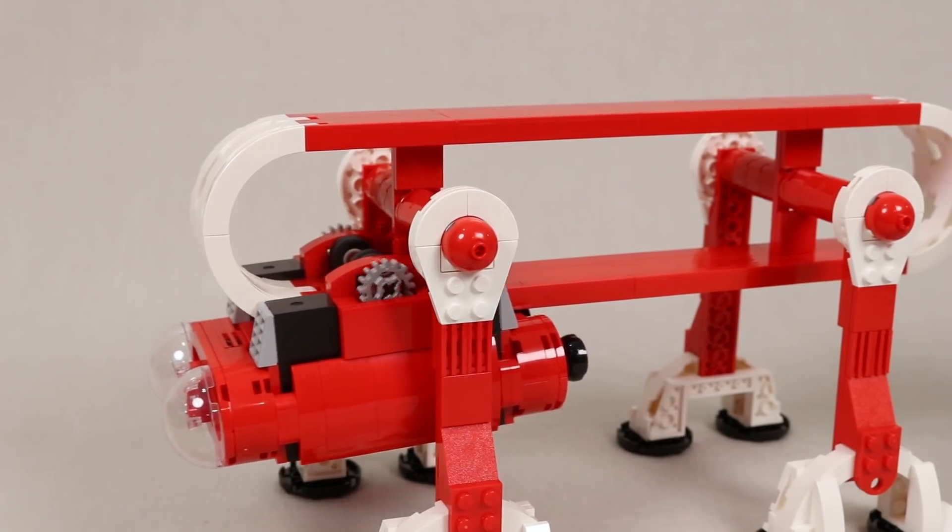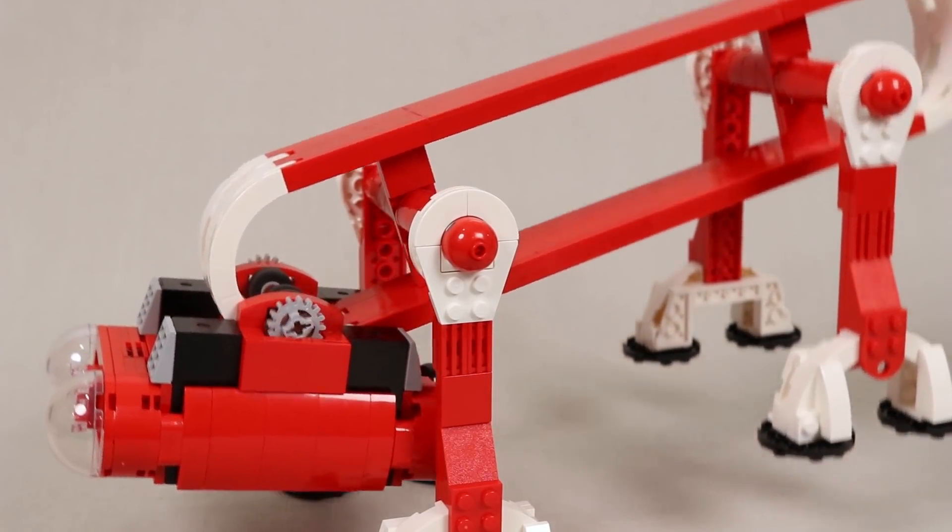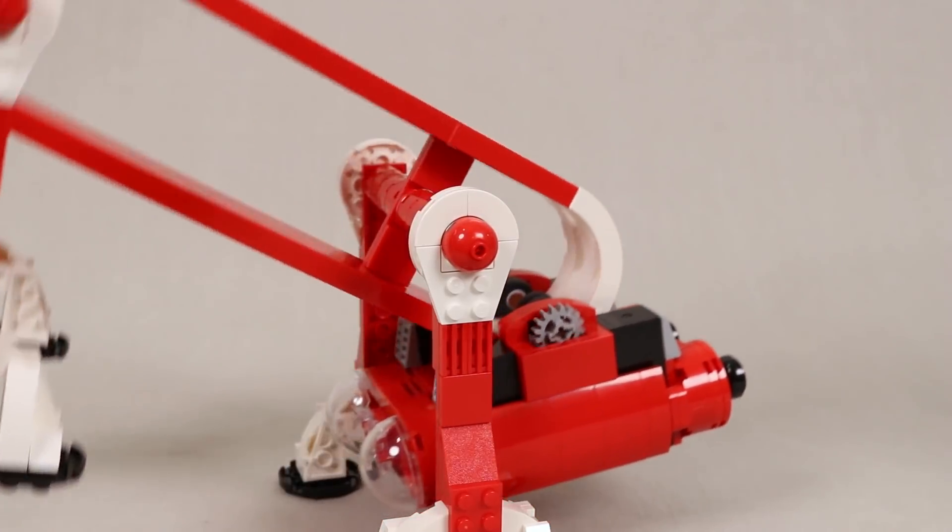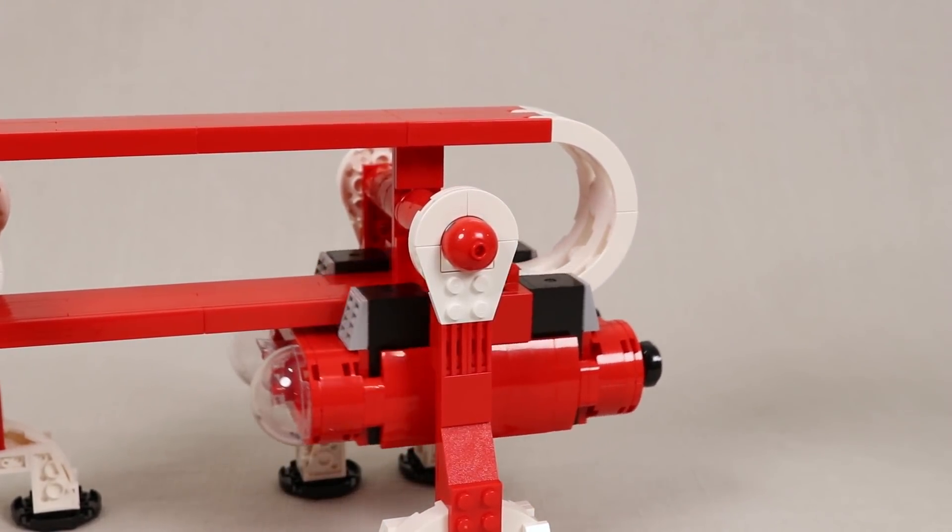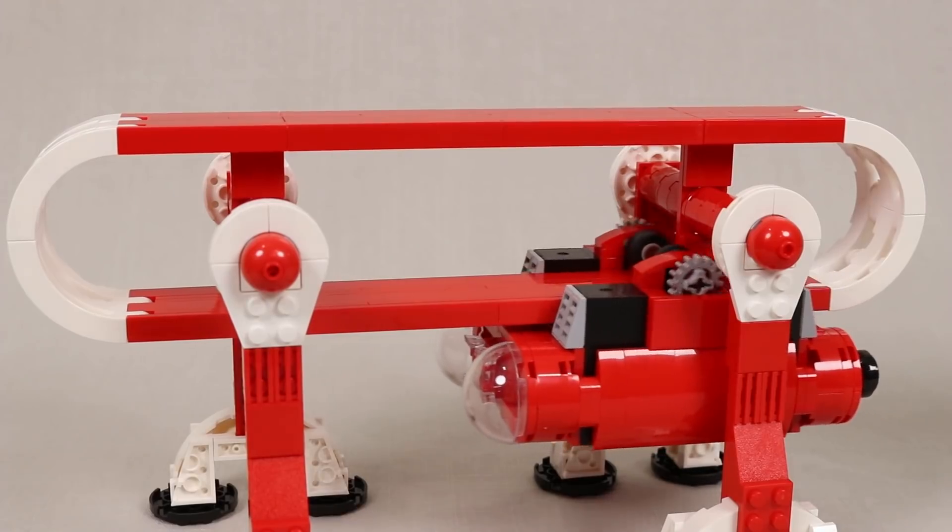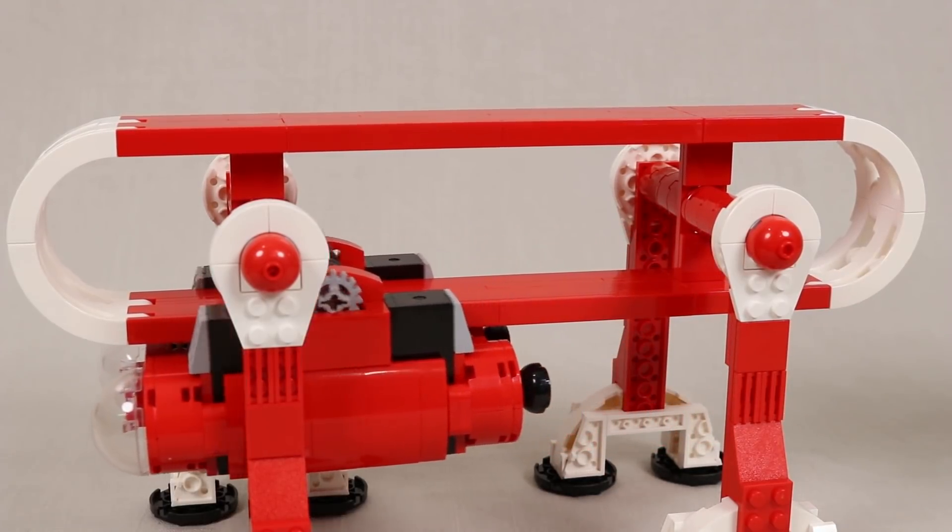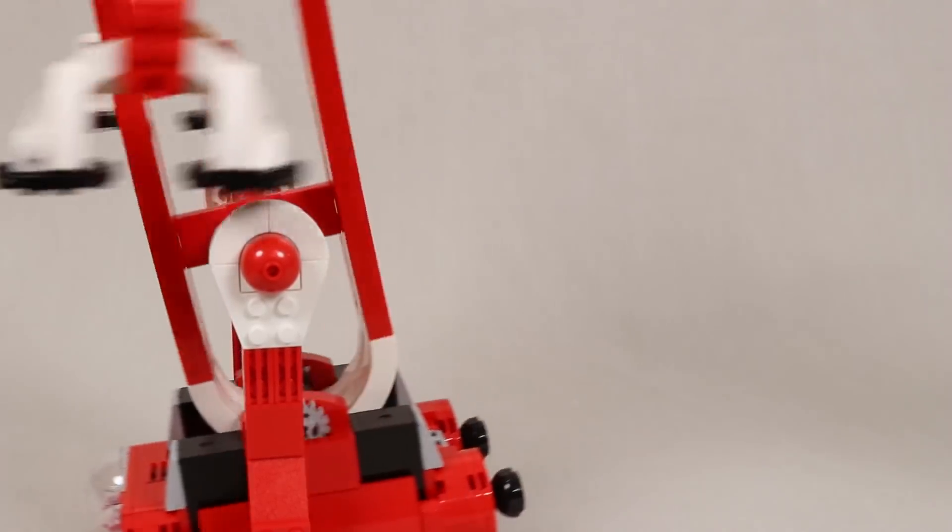As a result, as the trolley drives up the front of the loop it pulls the front end down and can continue driving as the entire loop flips over. The trolley then continues to drive along the bottom of the loop to get back to the front and it just keeps going.